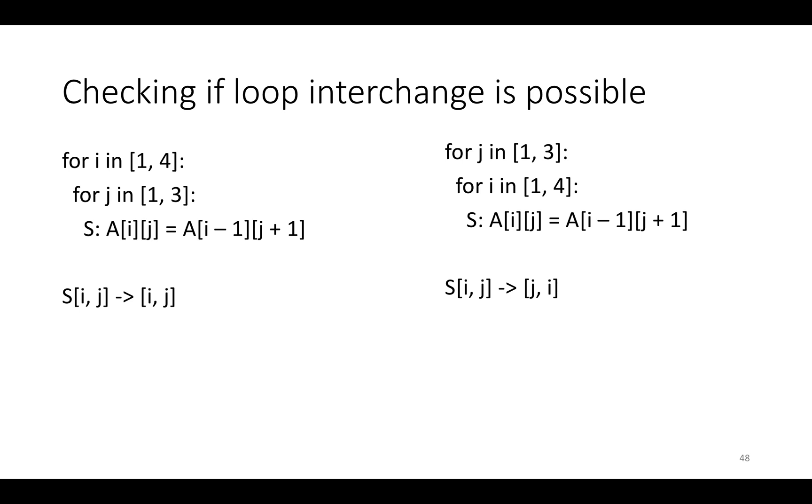So if we want to check if loop interchange is possible in multiple dimensions, let's say we want to change from for i in 1 to 4, j in 1 to 3 do S, to for j in 1 to 3, for i in 1 to 4 do S. So our old schedule is S[i][j] happens at time [i, j]. Our new schedule is S[i][j] happens at time [j, i].